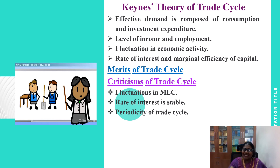Secondly, Keynes assumes that the rate of interest is stable, but the rate of interest does not play an important role in the decision-making process of entrepreneurs. Thirdly, Keynes does not explain the periodicity of the trade cycle. In the period of recession and depression, according to Keynes, the rate of interest should be high due to strong liquidity preference, but during this period the rate of interest is actually very low. Similarly, during a boom, the rate of interest should be low because of weak liquidity preference, but actually the rate of interest tends to be high.